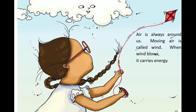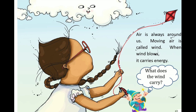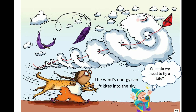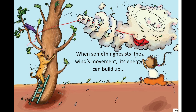Air is always around us. Moving air is called wind. When wind blows, it carries energy. What does the wind carry? The wind's energy can lift kites into the sky. What do we need to fly a kite? When something resists the wind's movement, its energy can build up.